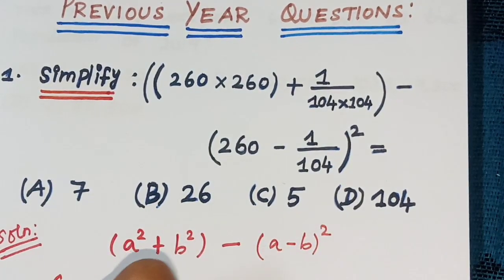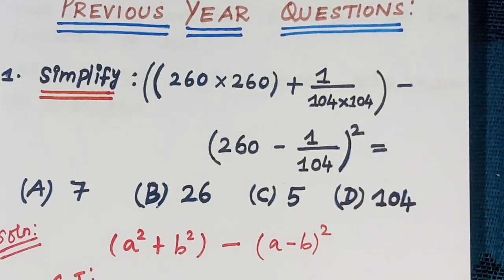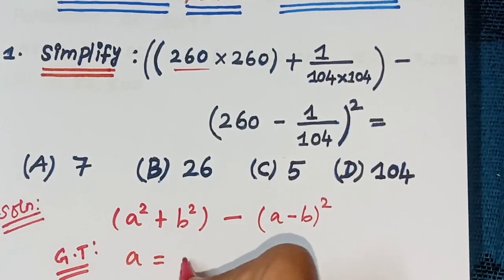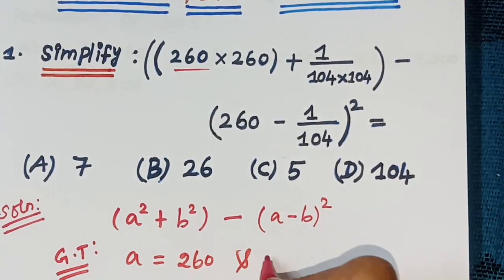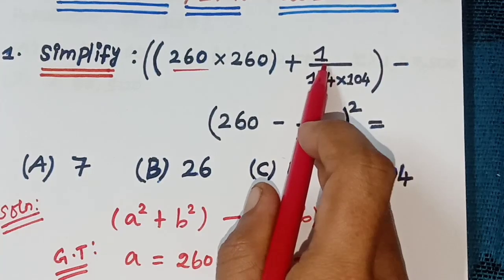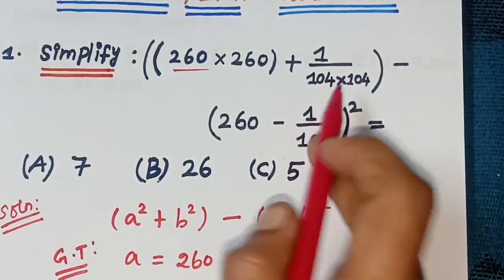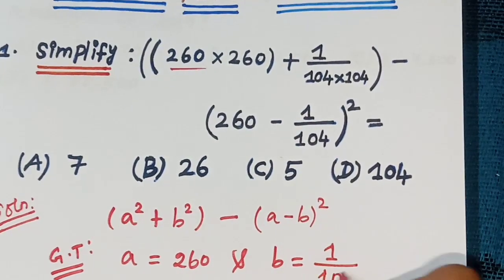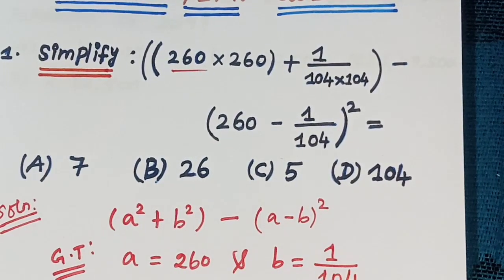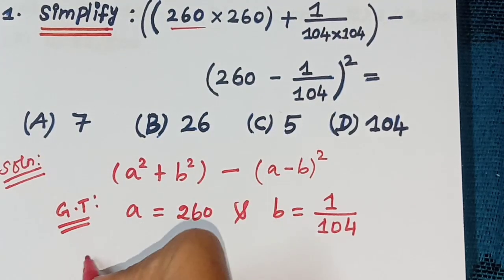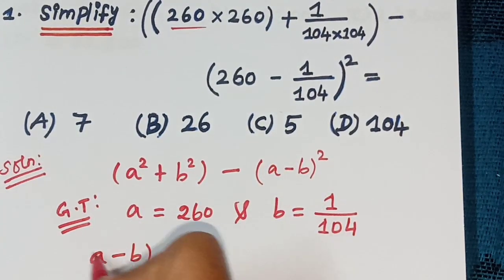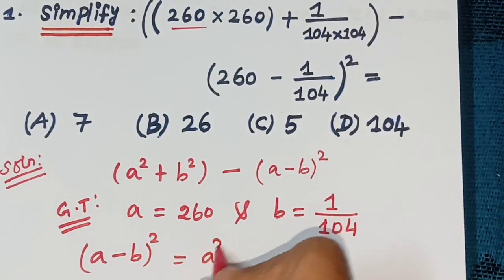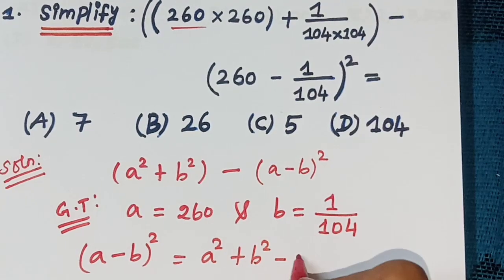Given that A equals 260 and B equals 1 divided by 104. Using the A square plus B square formula, expand (A − B) whole square as A square plus B square minus 2AB.